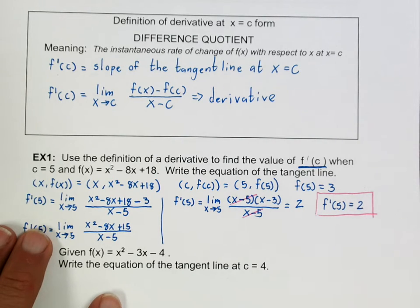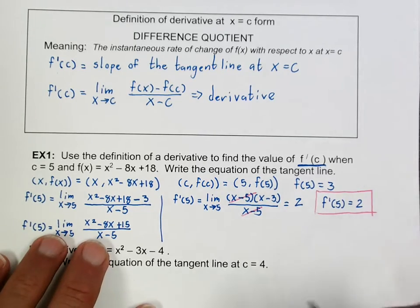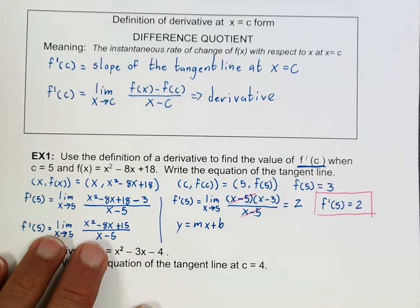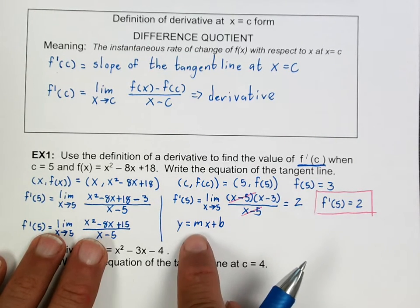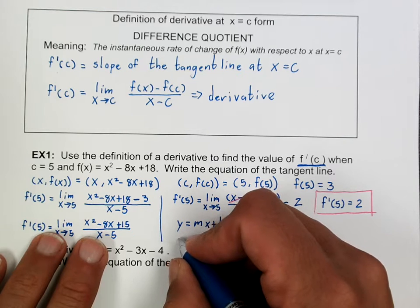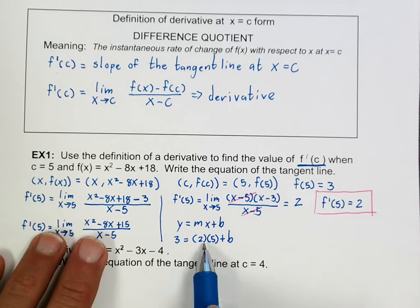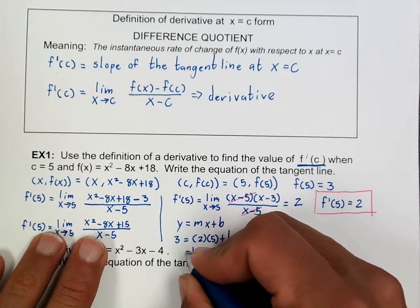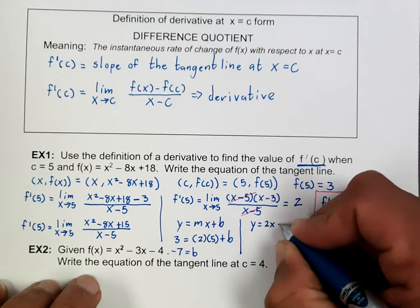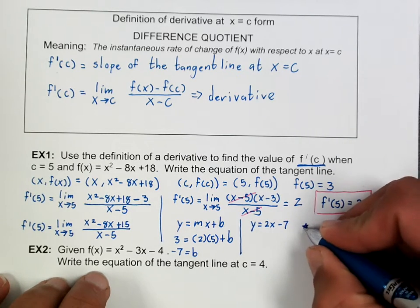The second part asks us to write the equation of the tangent line. To write the equation of a line using y = mx + b, we need the slope and a point. The slope is 2 and the point is (5, 3). Plugging in: 3 = 2(5) + b gives b = -7, so y = 2x - 7. However, on the AP exam they often prefer the point-slope formula.